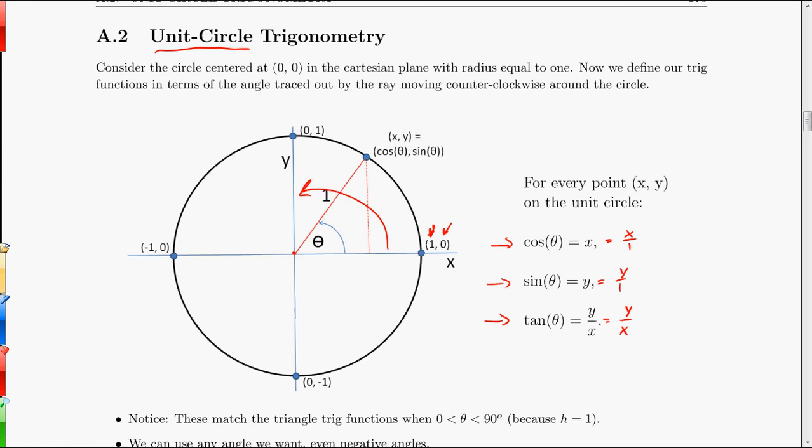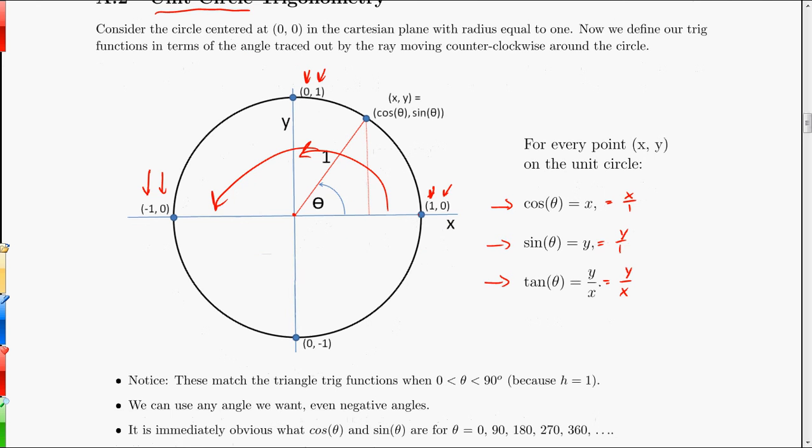Or 90, you're going to get cosine of zero, sine is one. Or 180, you're going to get cosine negative one, sine zero. So getting the sine and cosine for these angles is really quite easy when you think of it in terms of a unit circle.